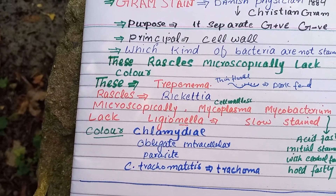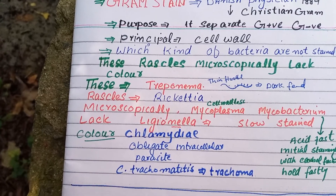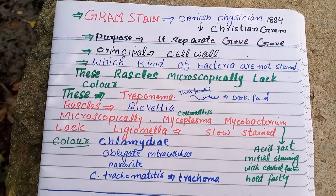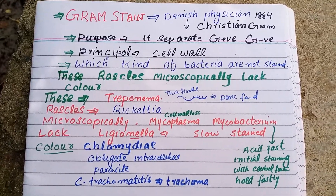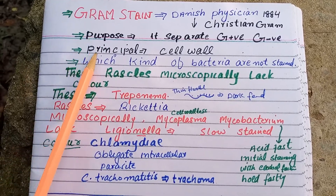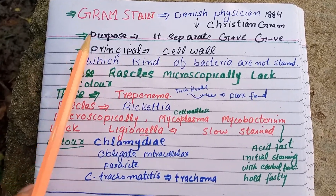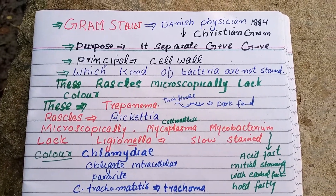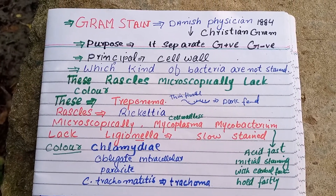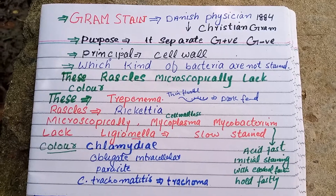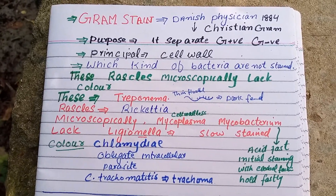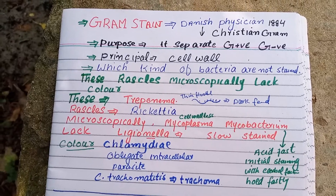In the next lecture I will discuss the procedure of Gram staining — why we add iodine after the crystal violet, why we add safranin, and why we add methylene blue in the case of acid-fast staining. We will discuss this in detail in the next lecture.